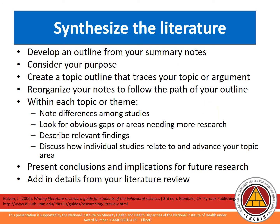Once you have summarized the literature, you are ready to move on to the fifth step: synthesizing the literature. This is when you take your summary notes and provide an informative write-up that clearly defines and informs your research question from the current literature. I recommend developing an outline from your summary notes. Consider your purpose in performing a literature review, then create a topic outline that traces your topic or argument. Within each topic or theme, note key differences in the studies you found, and look for obvious gaps or areas needing more research. Describe relevant findings and discuss how these relate to and advance your topic area, then present conclusions and implications for future research. Once mapped out, go back and add in details and supporting evidence from your literature review.